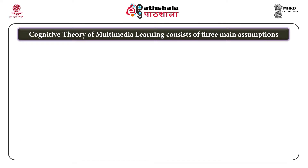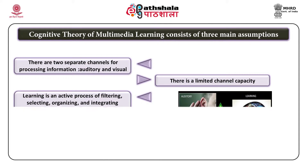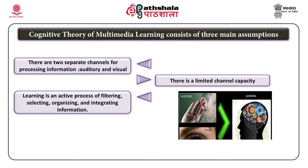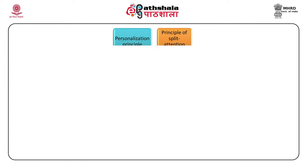The cognitive theory of multimedia consists of three assumptions: first, there are two separate channels for processing information — auditory and visual; second, there is limited channel capacity; and third, learning is an active process of filtering, selecting, organizing, and integrating information. Based on these assumptions, there are different psychological principles for creating e-content or multimedia, which is an important aspect of ICT. The first principle is the multimedia principle.